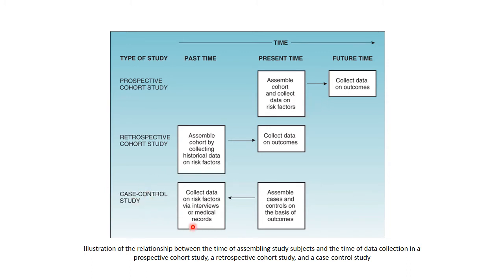Case-control studies assemble groups based on whether or not they have the outcome of interest — for example, whether they developed lung cancer — and then look backwards to see who had exposure to asbestos or other risk factors. From these associations we can make inferences and try to develop a possible cause-and-effect relationship.